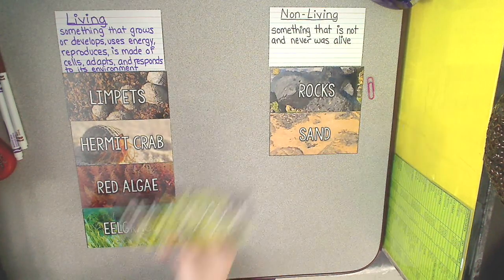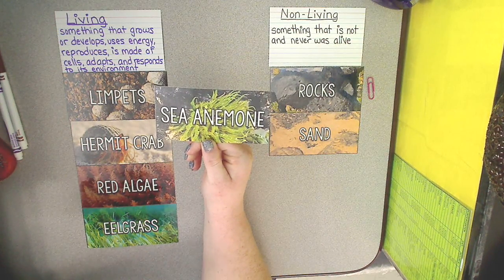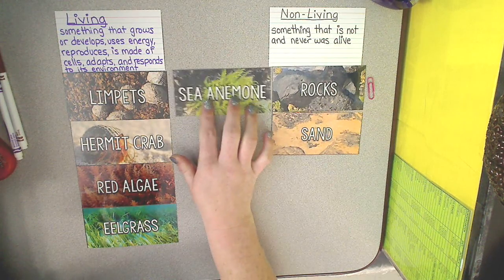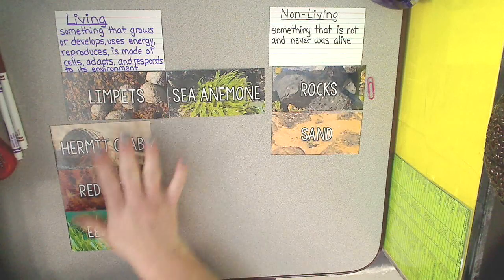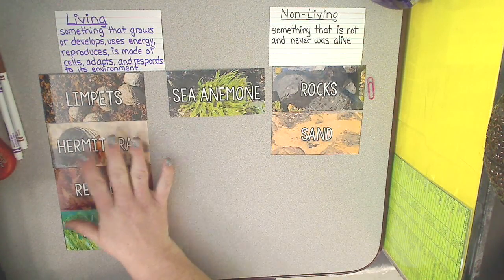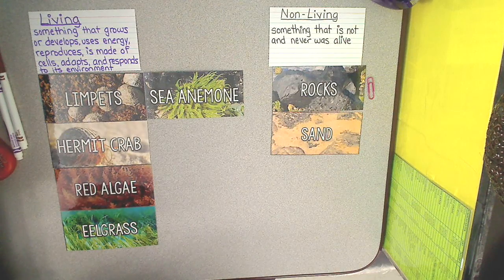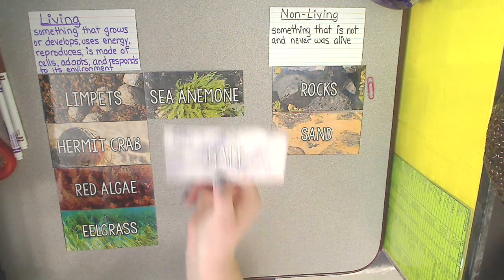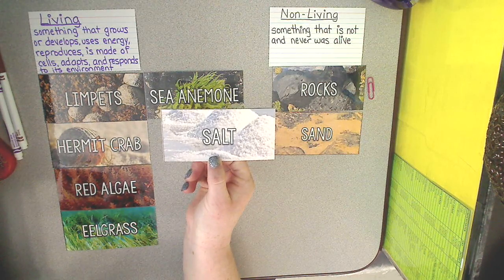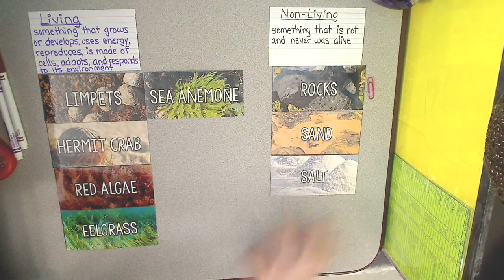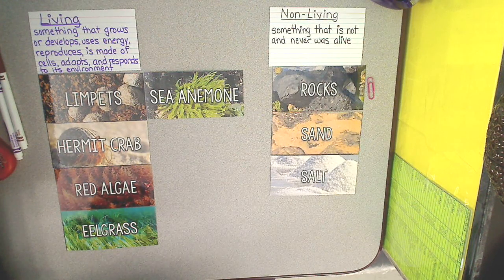What about a sea anemone? If you said living, you are correct — sea anemones are a type of organism that lives in tide pools and in the ocean, and they actually work with other animals to give them homes. What about salt? Salt is non-living — it is a mineral that was never alive and never will be.